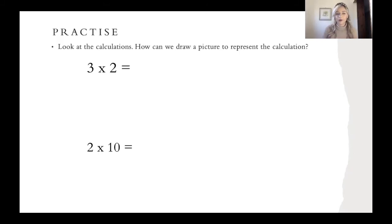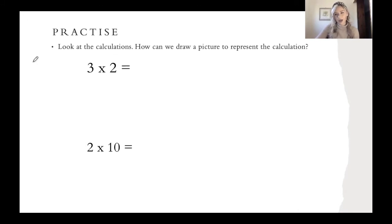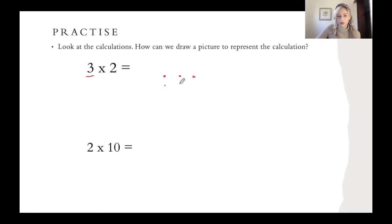So we're going to have a quick practice now. It says: look at the calculations — how can we draw a picture to represent the calculation? If you think of using your Numicon, that might help you. So have a quick go and then I will go through it with you. Pause the video to have a go. Well done for having a go at these. Now I'm going to show you how I would draw a picture to represent the calculation. So I know that I'm going to have three groups, so I'm going to draw the dots across: one, two, three. In each of my groups I need to have two. This is my first group with two dots, my second group with two dots, and my third group with two dots.